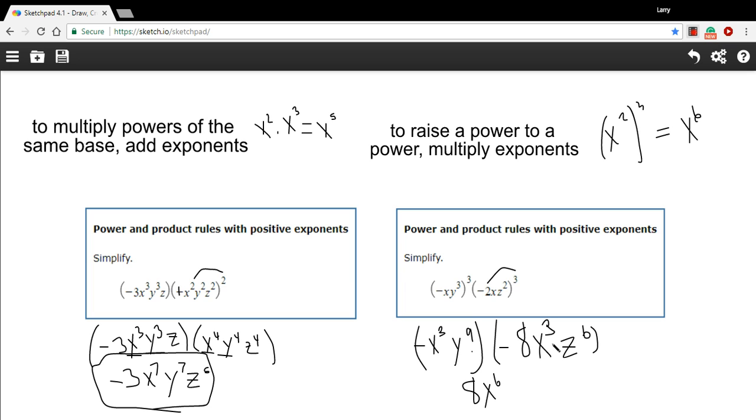And then y to the ninth and no y's over here, so I just put down my y to the ninth. And then my z to the sixth here, but no z's over there, so that's just z to the sixth.